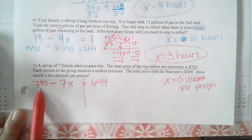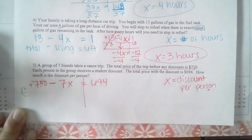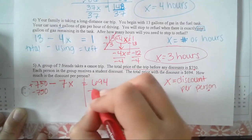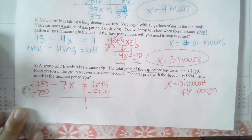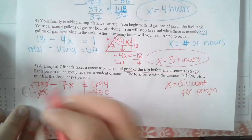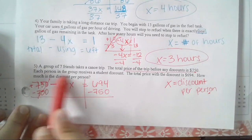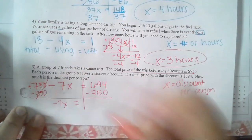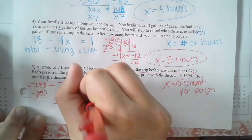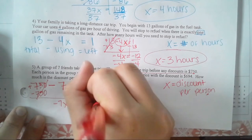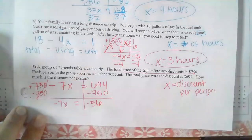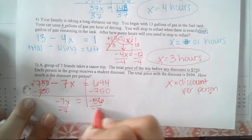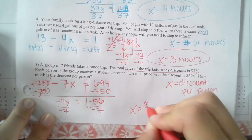Let's solve it. First move the $750 — since it's positive, the opposite is subtracting. You're left with negative 7X. Bring down that minus sign because 7X is negative. Then 694 minus 750 gives you negative 56. So negative 7X equals negative 56. The last step is to divide by negative 7 on both sides, and X equals $8 per person.